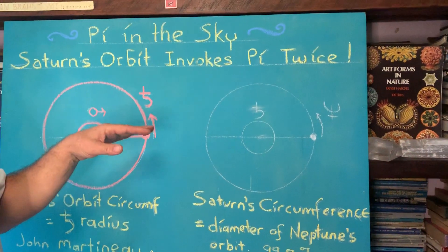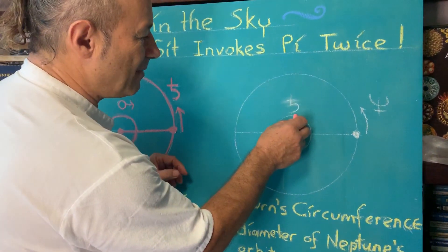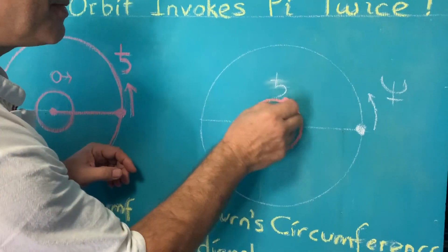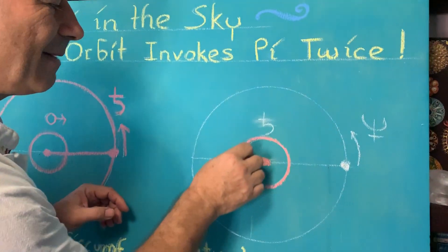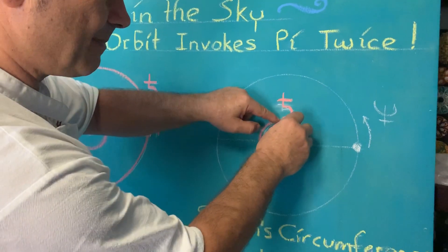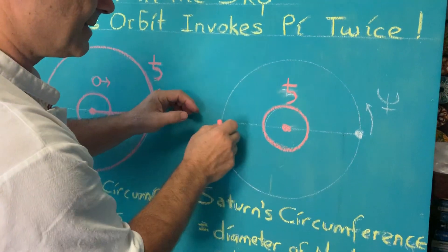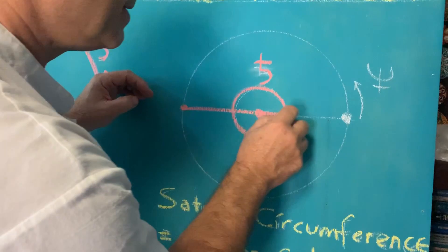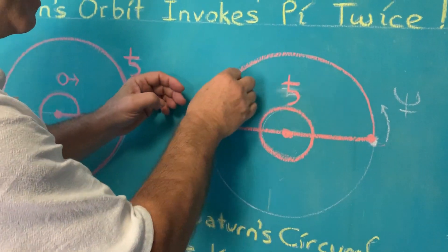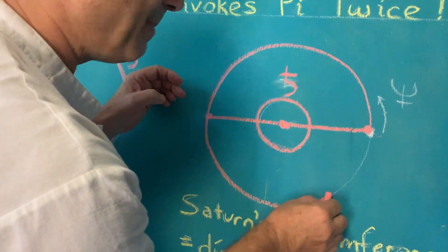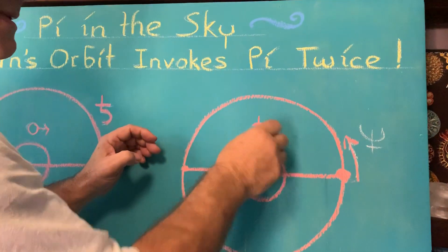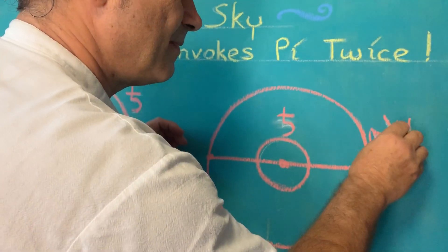There exists another similar example. This time we're going to look at Saturn. We put the Sun here, and as Saturn goes around the Sun — taking 30 years — we're interested in the circumference of that circle. Now if I was to pick this up like a shoestring and unravel it out, that distance becomes the diameter of Neptune. So the circumference of Saturn equals the diameter of Neptune — another Pi relationship.